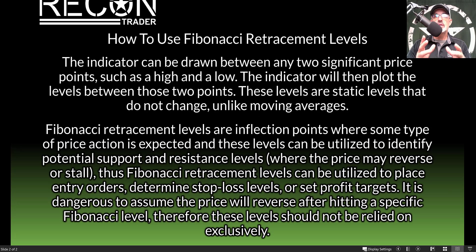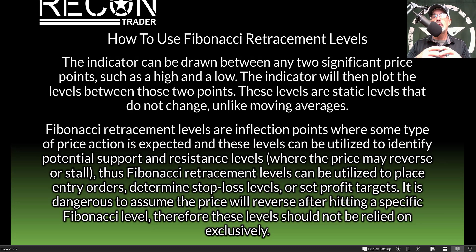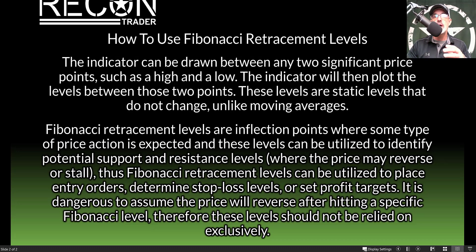Now we can take a look at how you could actually use these Fibonacci retracement levels based on those ratios. The indicator is basically drawn between any two significant price points such as high and low pivot points. The indicator will then plot the levels between the two points that you have chosen. It's important to note that the Fibonacci levels are static levels that do not change, unlike a moving average that is constantly changing with the movement of the price.